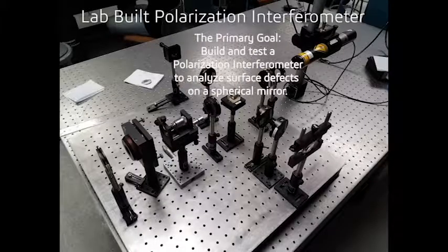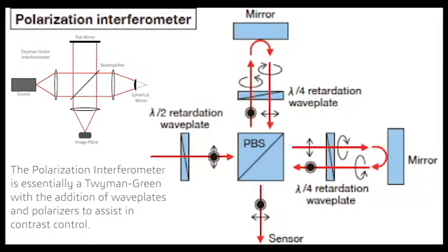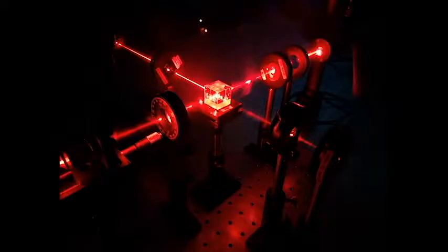For our final project, we built a polarization interferometer for detecting defects in a spherical mirror. The polarization interferometer is based on the Twyman Green, which uses a collimated light source, in our case, a 632.8 nanometer Helium-Neon laser.